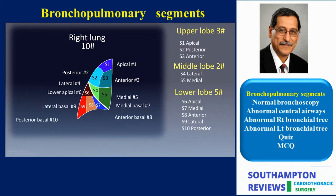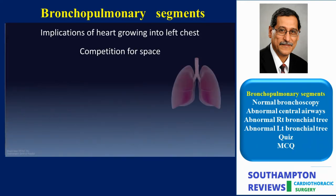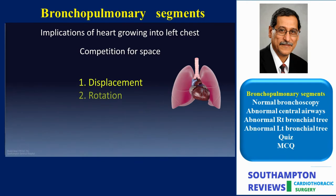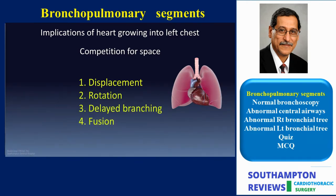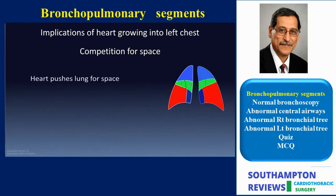The heart descends with the diaphragm and pericardium as it is developing, and the direction of descent is towards the left chest, competing for space with the left lung. As a result of this competition, the lung adjusts in several ways — such as displacement, rotation, delayed bronchial branching, and lobar fusion. Squeezing the left lung results in fusion of the middle lobe and the upper lobes into one lobe, which we will call the upper lobe.